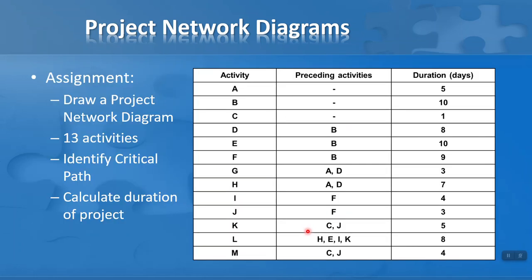In your assignment for this lesson, I'm going to give you information and ask you to generate a project network diagram based on 13 activities. Draw the diagram according to the rules we've covered — there will be bursts and merges, so watch out for those. Once you've drawn the diagram, add in all the durations in days, identify the critical path (there are several through this particular project network diagram), and then calculate the duration of the project.